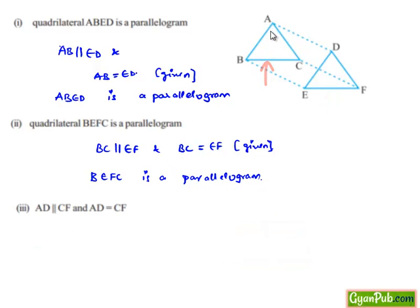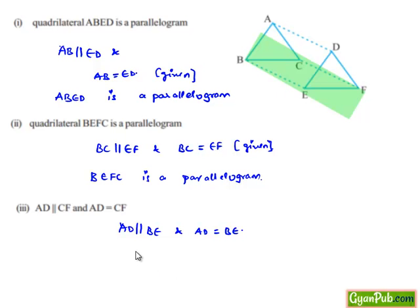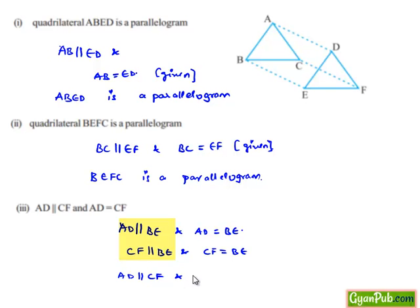Now, initially we proved that ABED is a parallelogram. So from that, we can say AD is parallel to BE and AD is equal to BE. Similarly, from the second proof that BEFC is a parallelogram, we can say CF is parallel to BE and CF is equal to BE. So from these two, we can say AD is parallel to CF and AD is equal to CF.